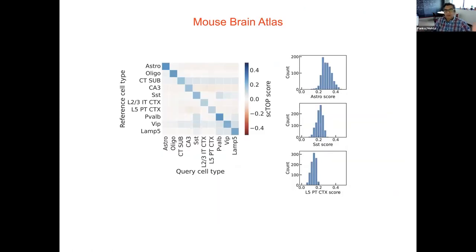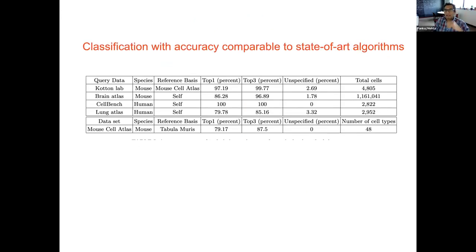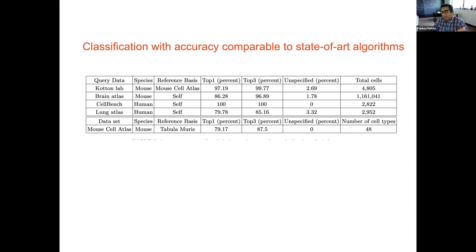You can do this on the mouse cell atlas and ask how well you can predict a cell type — it works really well. I want to emphasize this is average scores at the single-cell level. You can do it on human data; it doesn't really matter. It just seems to work off the shelf on everything we've done. The classification is actually comparable to fancy machine learning models with humongous training sets. It's a little bit worse because it's not fine-tuned, but it works on everything — it's always the same thing.